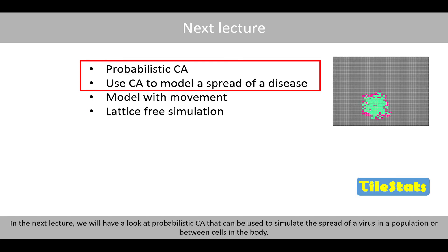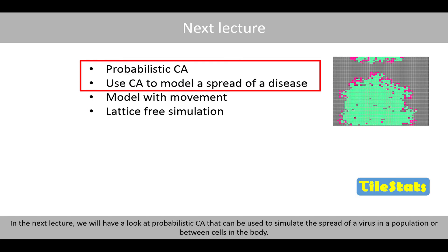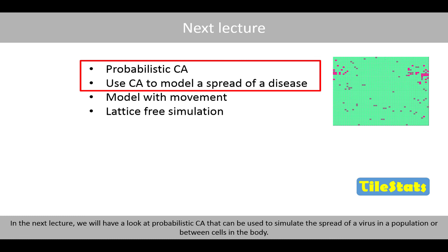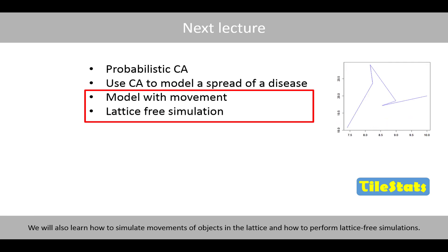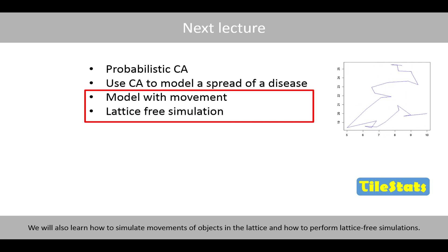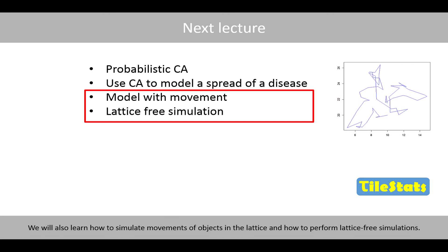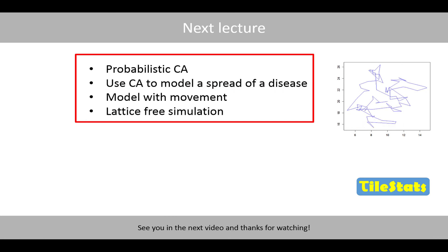In the next lecture, we'll have a look at the probabilistic cellular automata that can be used to simulate the spread of a virus in the population or between cells in the body. We will also learn how to simulate movements of objects in the lattice and how to perform lattice-free simulations. See you in the next lecture and thanks for watching.